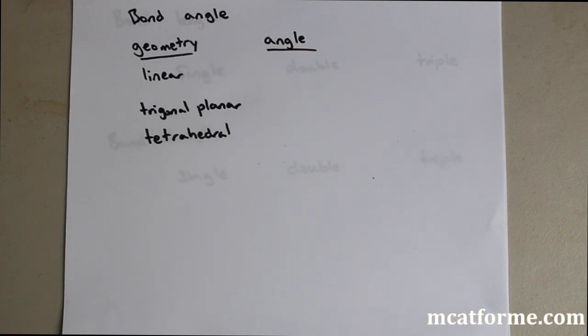Now we're going to be looking at bond angle, bond length, and bond strength. And so the first thing we're going to be looking at is bond angle.